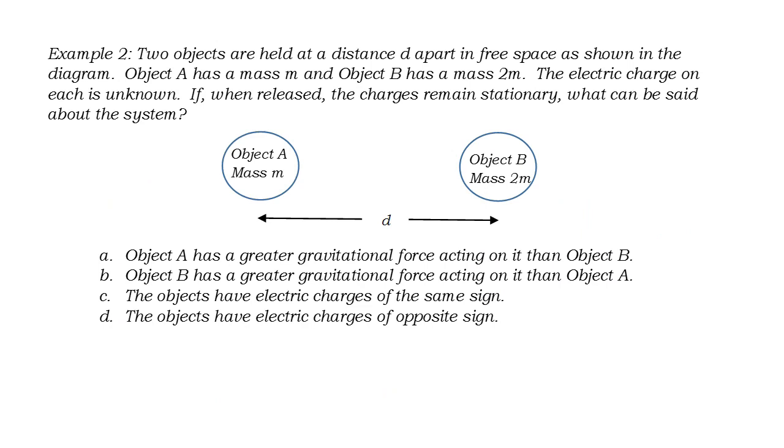In example 2, two objects are held at a distance d in free space, as shown in the diagram. They both have mass, so they must have a gravitational force attracting them towards each other. The magnitude of these two forces must be the same because of Newton's third law. For every force, there is an equal but opposite force.